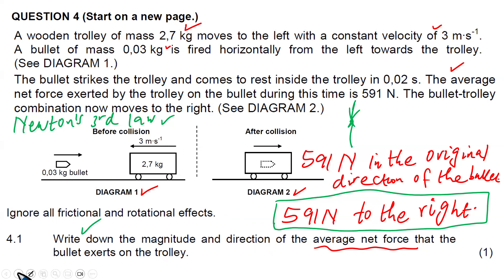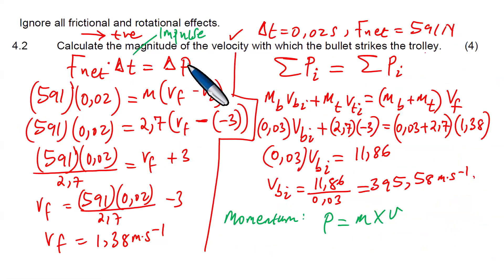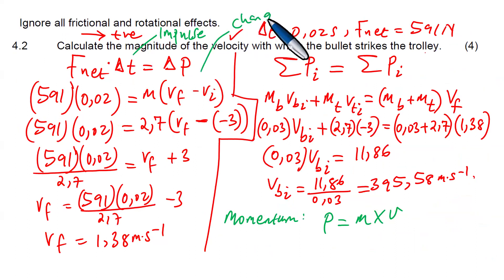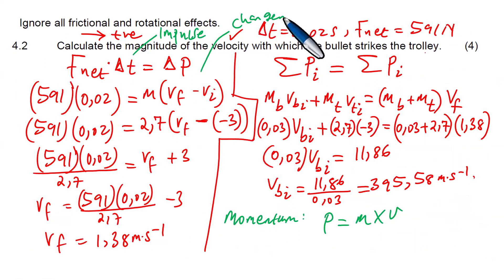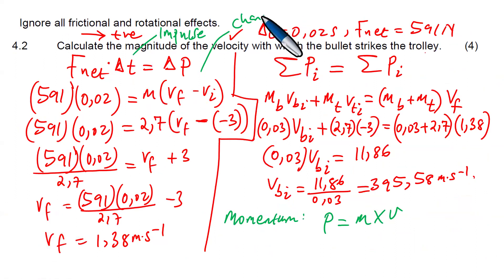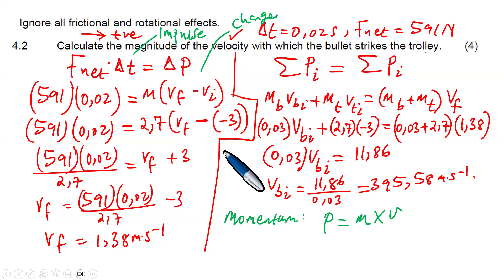When we study momentum, we are also interested in delta P — the change in momentum. The change in momentum is equal to F_net × ΔT. So: delta P = F_net × ΔT. Take note of these things very well.